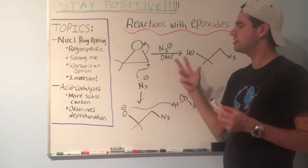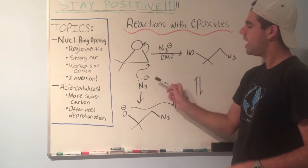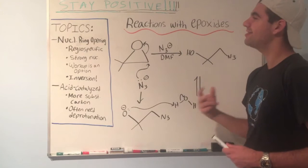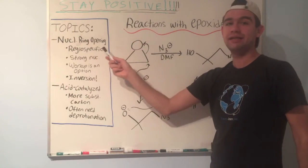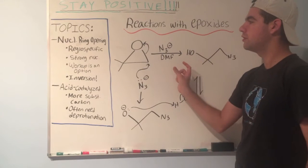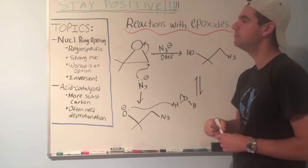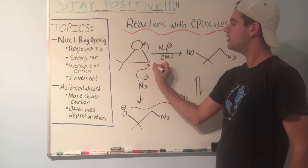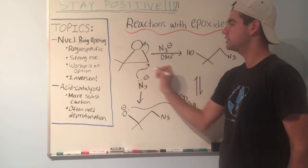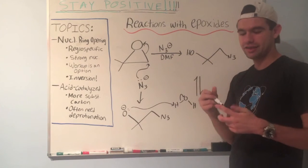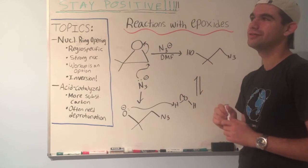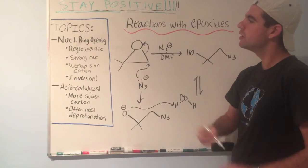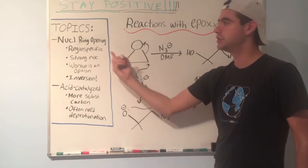The N3 attacked this carbon but not the other one — why? In nucleophilic ring opening, you have regiospecificity: the strong nucleophile will always attack the less-substituted carbon. This carbon is tri-substituted (three carbons attached), while this carbon is only mono-substituted (one carbon attached). Due to sterics — going back to SN2 — a strong nucleophile doesn't want a lot of sterics, so it makes sense that it attacks at the less-substituted carbon.